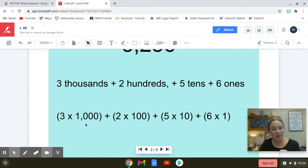We have 3,000s, so 3 times 1,000, plus 200s, 2 times 100, plus 5 tens, 5 times 10, plus 6 ones, 6 times 1.